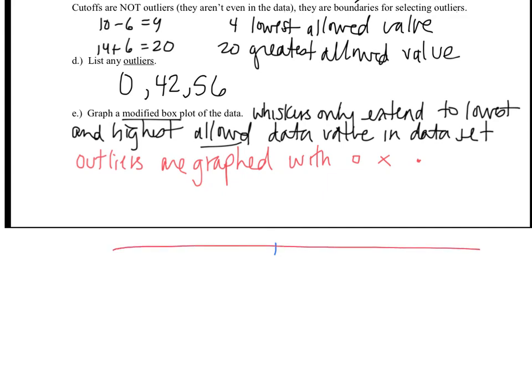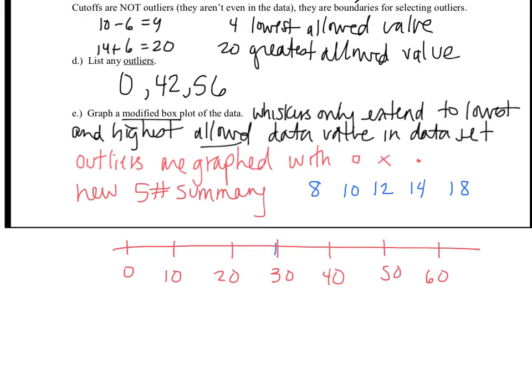And then if I label my number line, we'll start with 0, 10, 20, 30, 40, 50, and 60. And the new 5-number summary is going to represent my new min and my new max. So my newest minimum is 8, because that's the lowest value within the limits for my outliers. And then I have 10, 12, and 14 for my Q1, median and Q3, and 18 is my newest maximum.